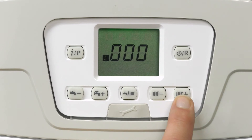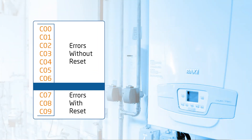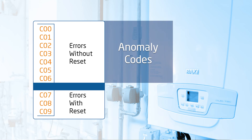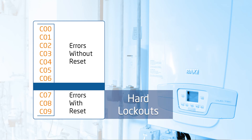This boiler can store up to ten errors. Continue pressing the radiator plus button to access errors all the way to C09. C00 through C06 are what we call anomaly codes. These will not register on the front display and do not require a soft lockout or a hard reset. C07 through C09 are your hard lockout errors — those are the ones that require a reset button to be pressed.